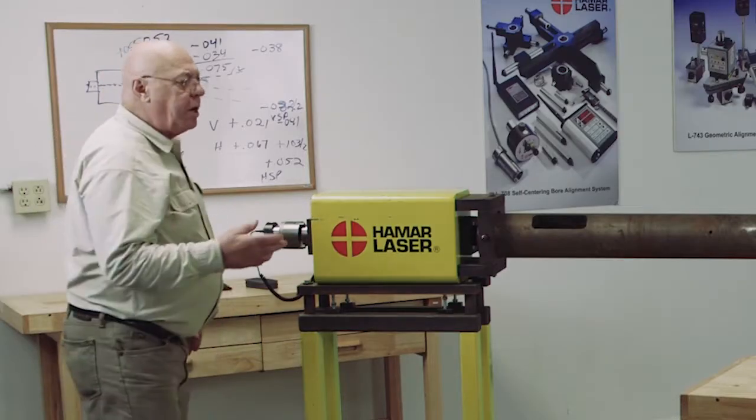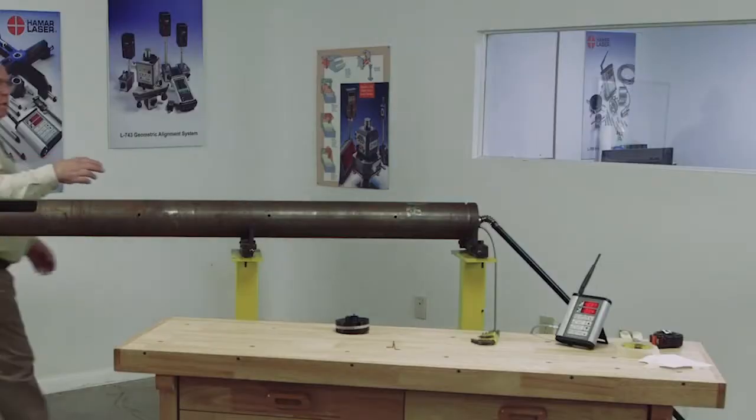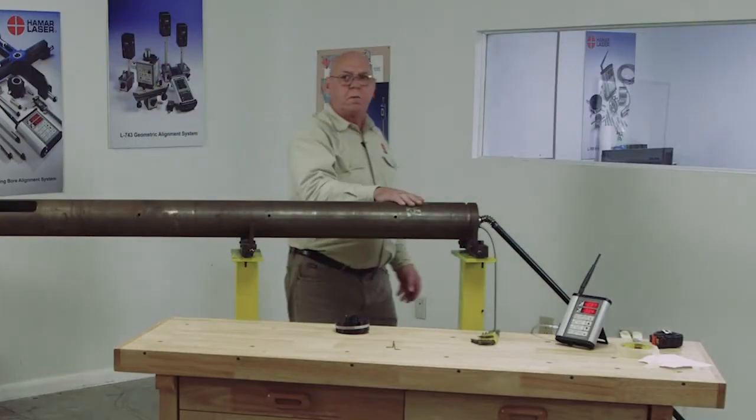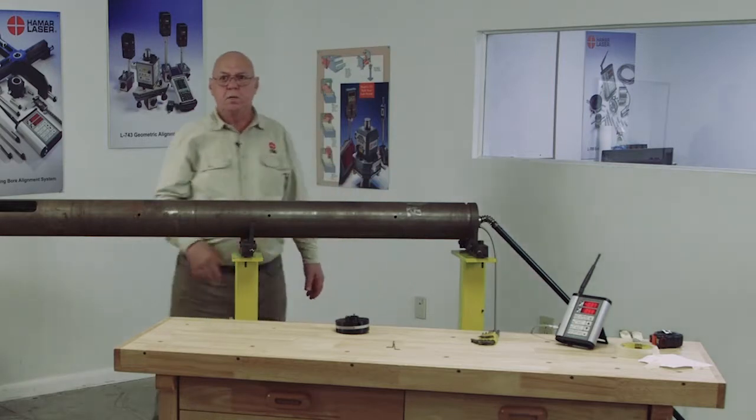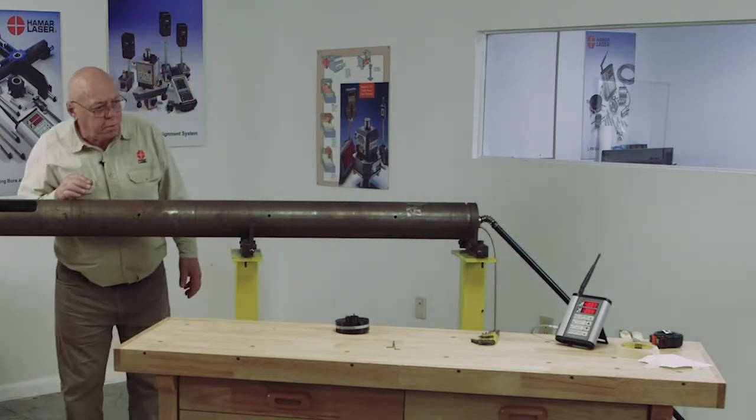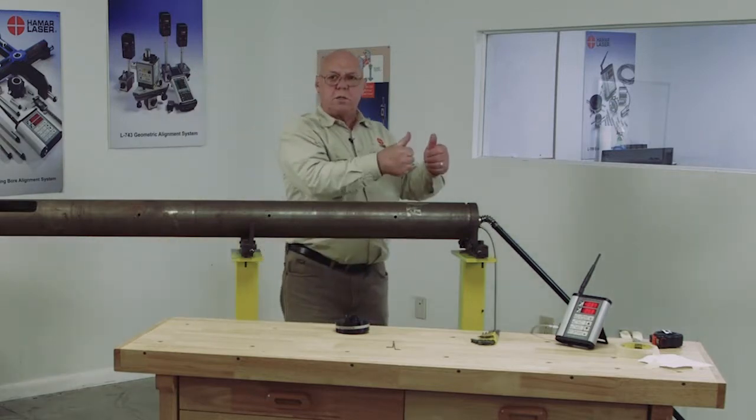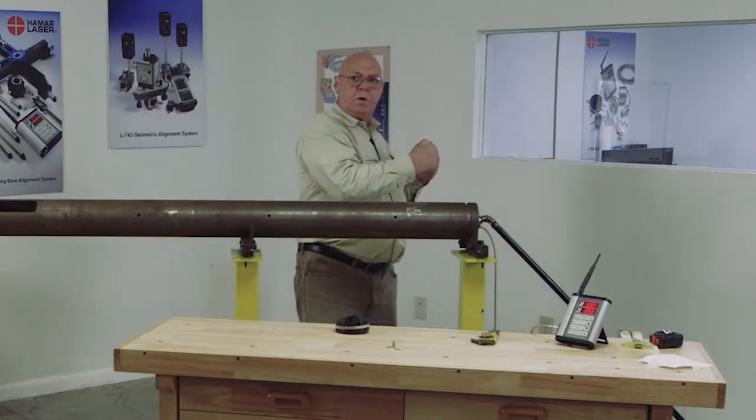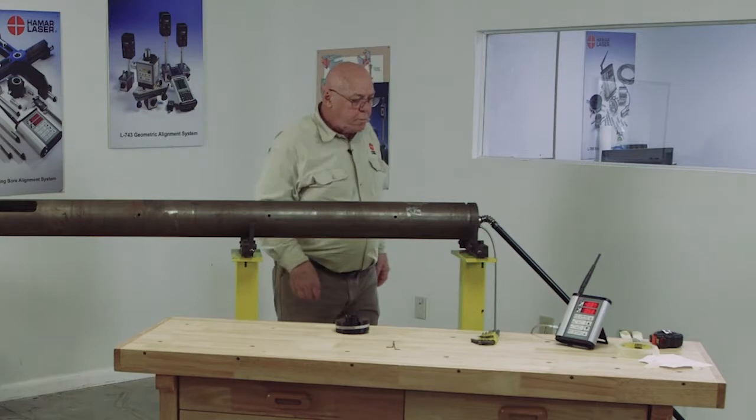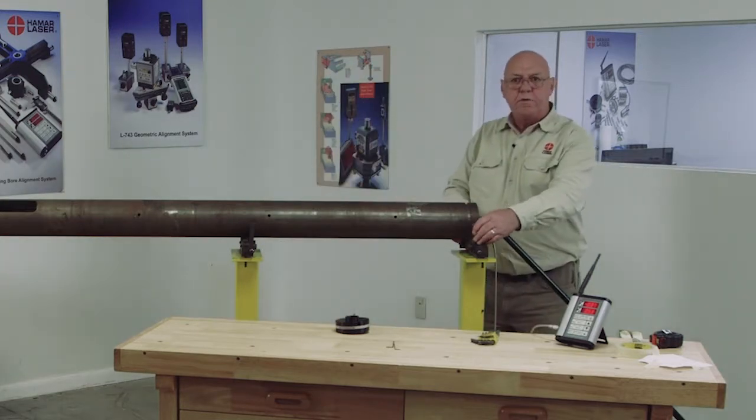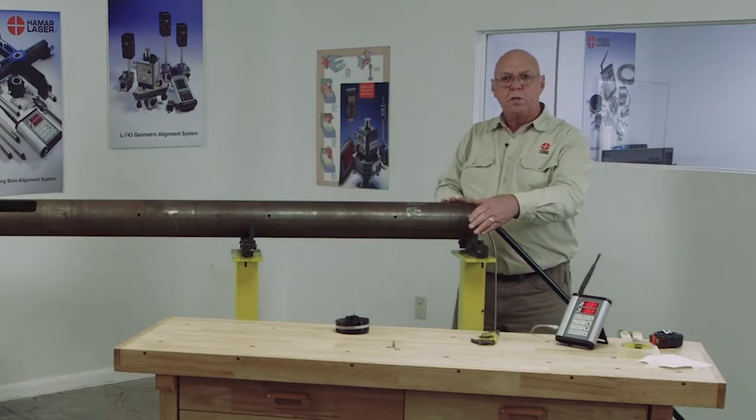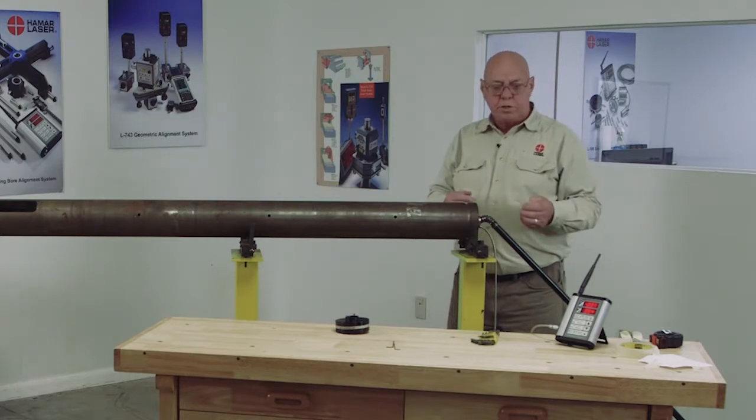So what that's telling me is this end of the barrel is 37 thousandths low and 55 thousandths off to the right. So it has to come at 53 thousandths. I have to raise this up and move it over in this direction. Normally on these, you have a V-block that this barrel sets in so you can make these adjustments.